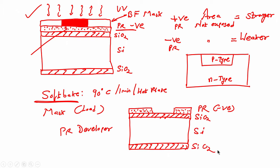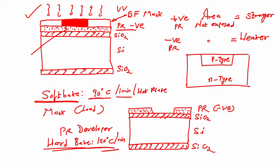After etching SiO₂, I will do hard baking at 120 degrees centigrade per minute — it depends on the photoresist datasheet. The datasheet specifies what soft bake temperature to use, how long to bake, the hard bake temperature, and everything else for that particular photoresist, so you have to look at the datasheet.